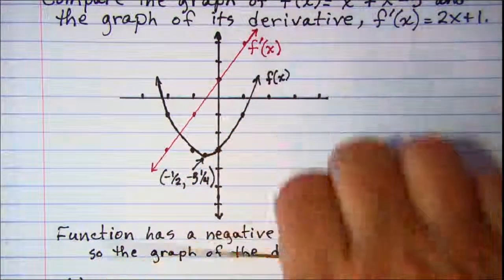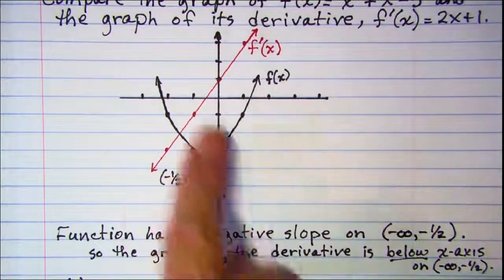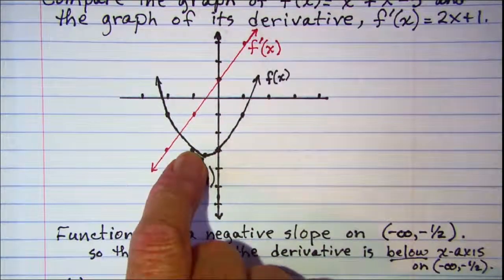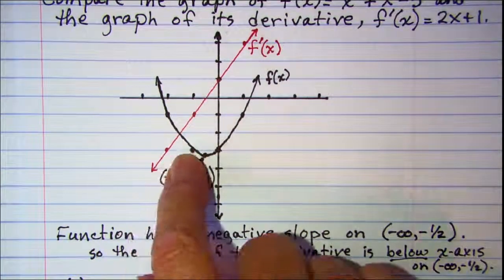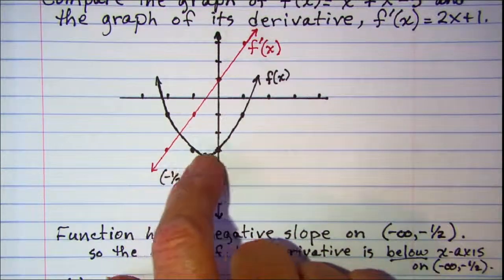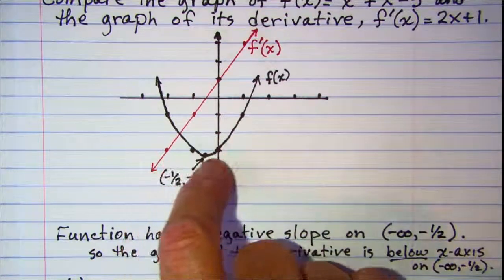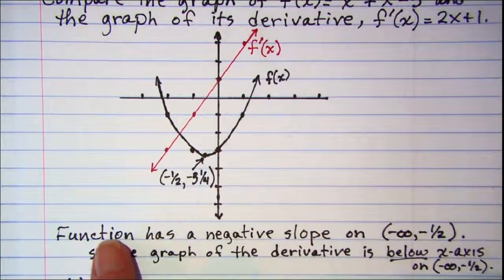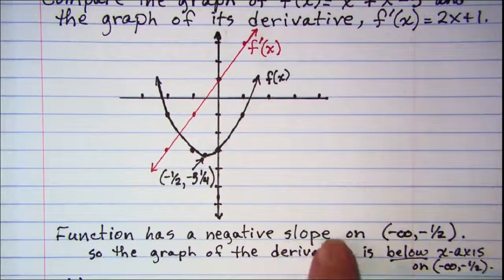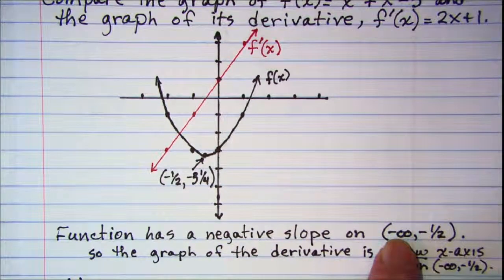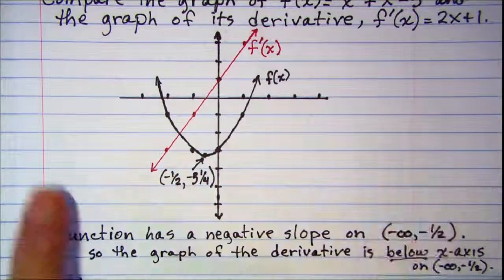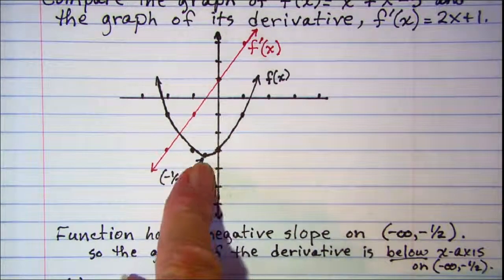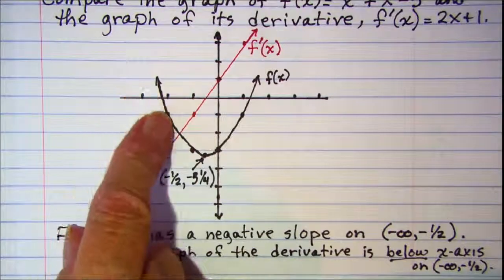So on the left side of the vertex of the parabola, I have a negative slope for my tangent line. Then at the vertex my slope is zero because my tangent line is horizontal. And then on the right side my tangent line has a positive slope. So the function has a negative slope on the interval from negative infinity to negative one half.